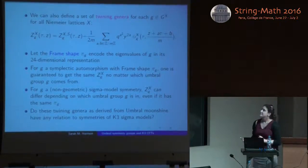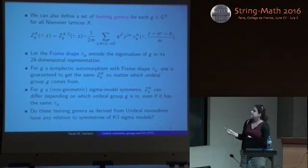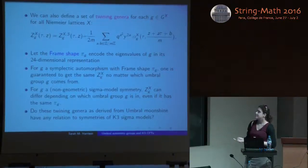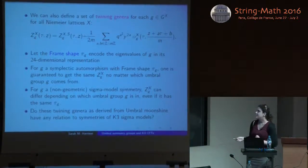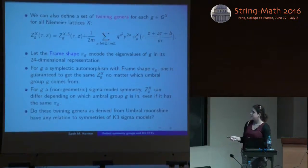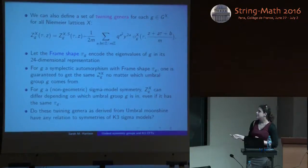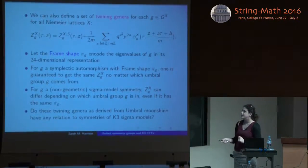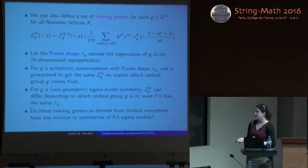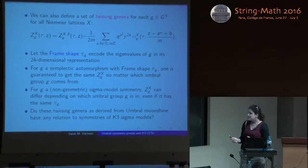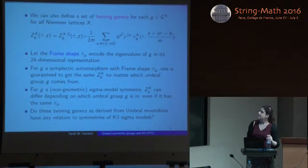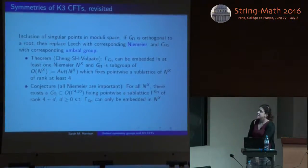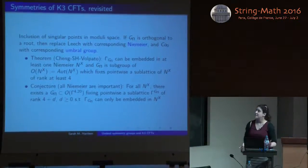One can define twining genera for each conjugacy class in all the different Umbral groups associated to each Niemeyer lattice. As a consistency check, if you call πG the eigenvalues of G in its 24-dimensional representation — the frame shape — then if G is a symplectic automorphism with a particular frame shape, one is guaranteed to get the same twining function no matter which group it comes from. However, if G is some non-geometric symmetry, the twining function can differ depending on which Umbral group it's in. So one might ask if these twining genera derived from Umbral Moonshine have any relation to symmetries of K3 sigma models, and this motivates revisiting the GHV theorem with singular points.